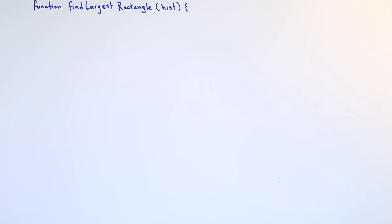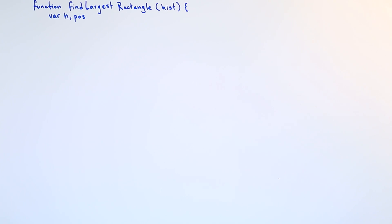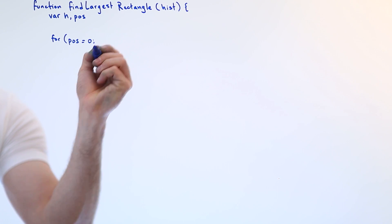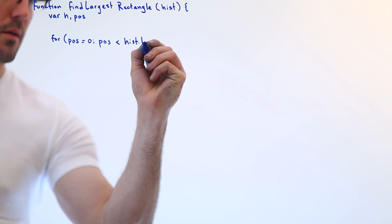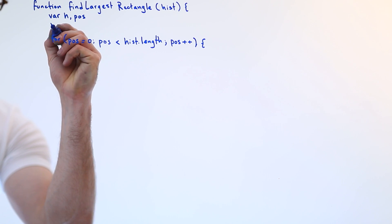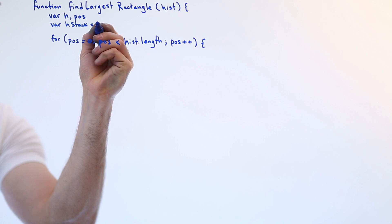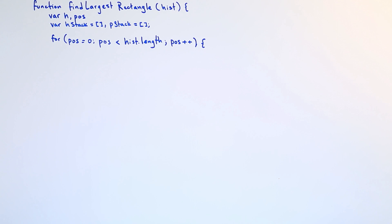We don't have a histogram class either, but we can leverage a vanilla JavaScript array — JavaScript only has two data structures, both super versatile. We'll represent our histogram as a JavaScript array with a positive integer in every position representing the y-axis, and the position in the array representing the x-axis. Let's call this function `findLargestRectangle`. Right off the bat we need at least something to address the height we're currently at and something to store the current position. We'll use a for loop, an ancient form of loop used way before for-each.